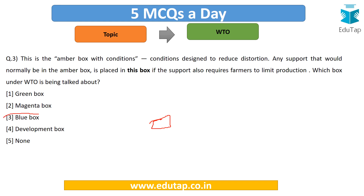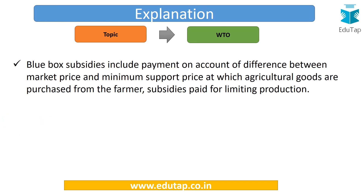The correct answer is three — the blue box. Blue box subsidies are those that would otherwise have been amber box subsidies, but they include payments on account of the difference between the market price and MSP at which agricultural goods are purchased from the farmer, or subsidies paid for limiting production. It is actually a very controversial box.